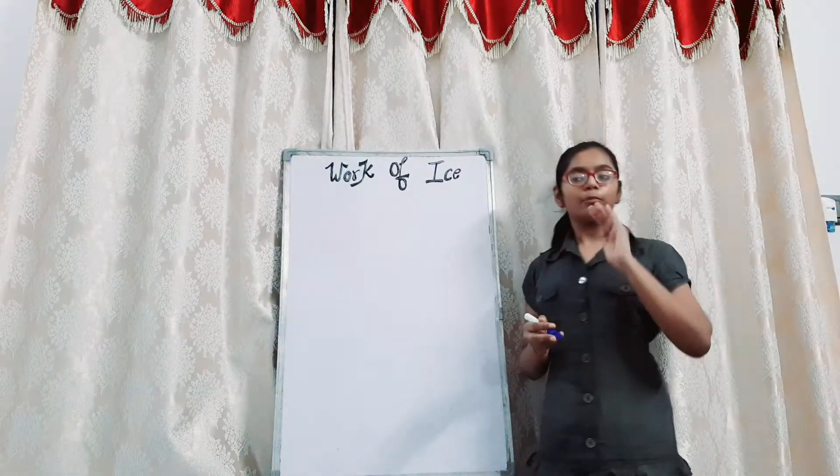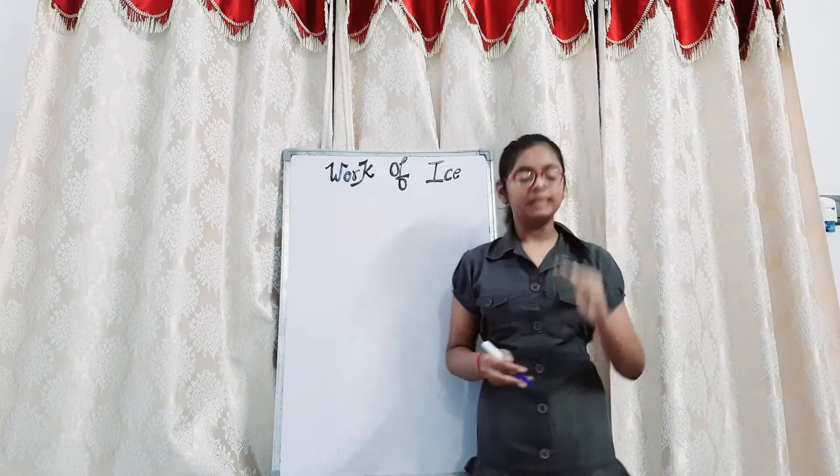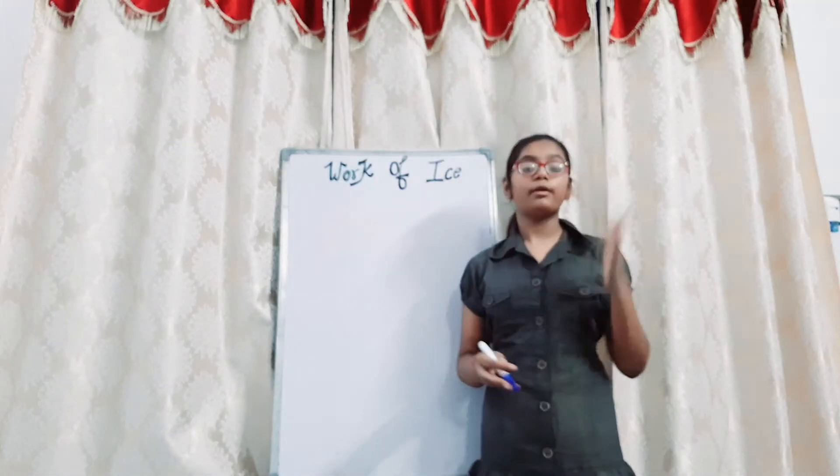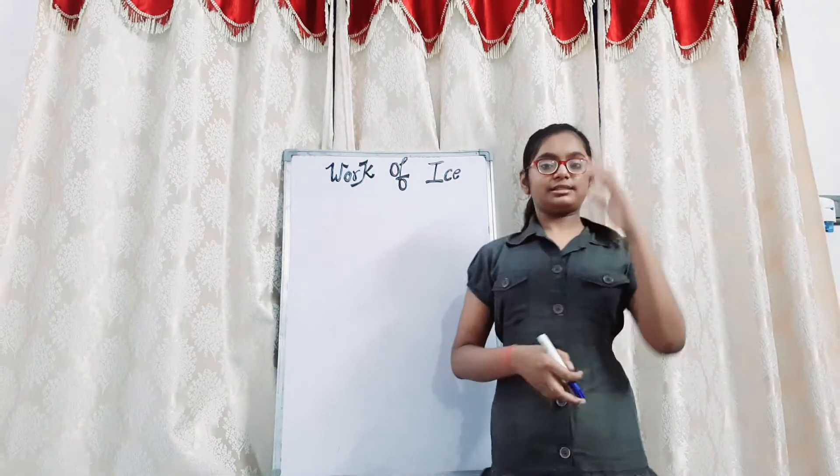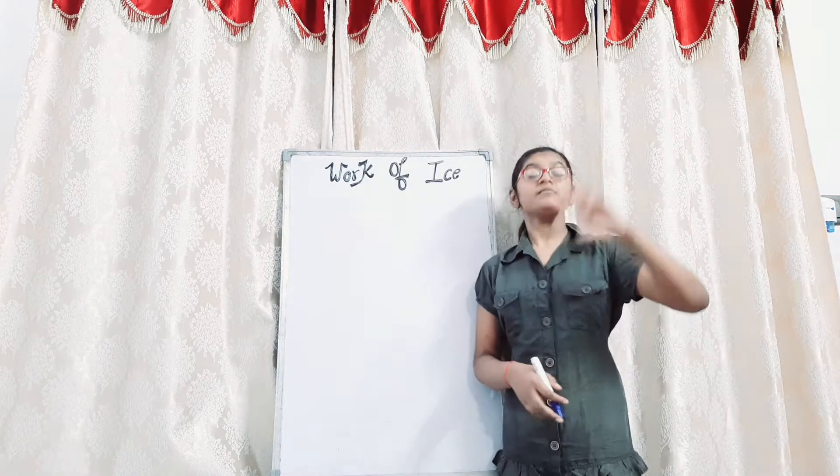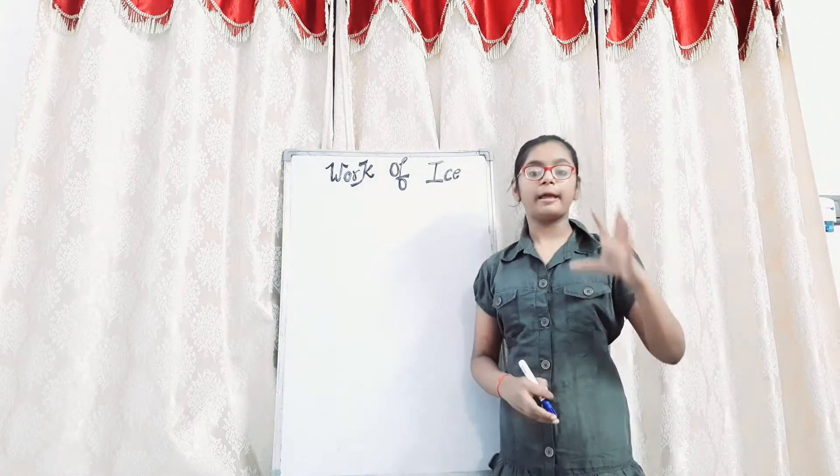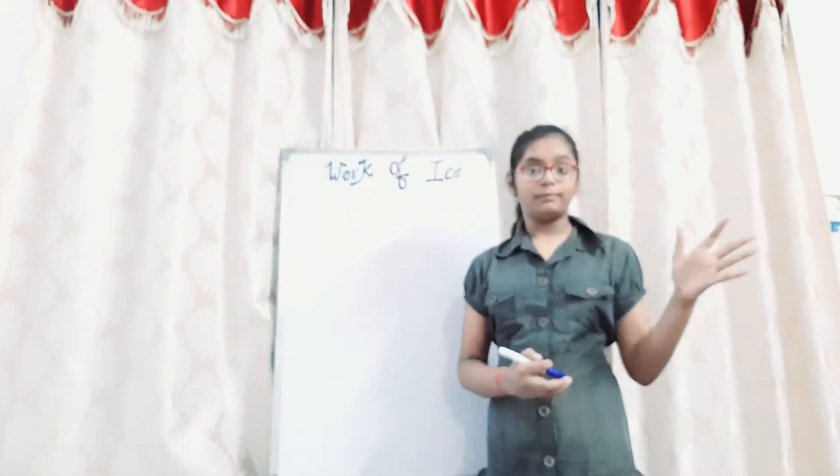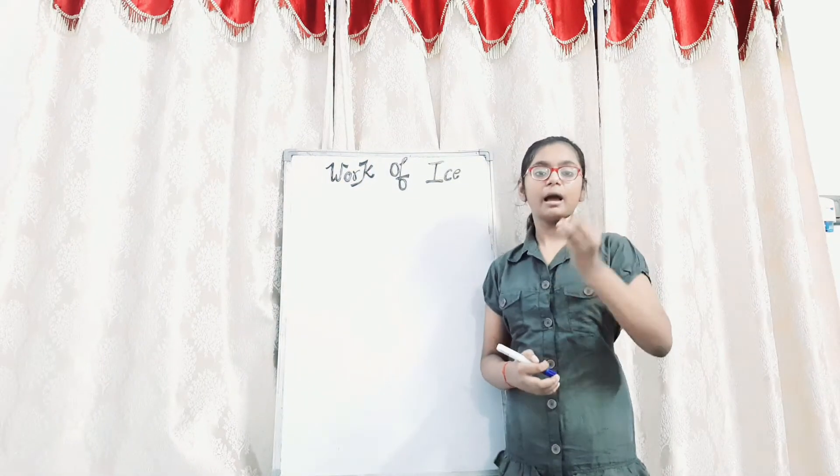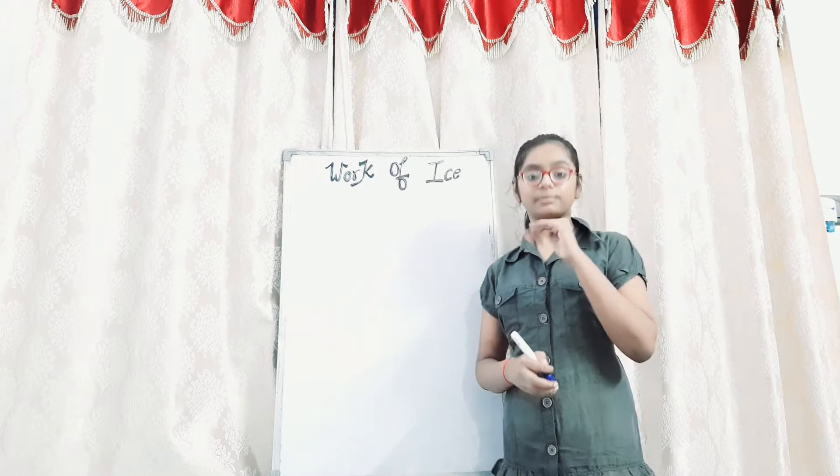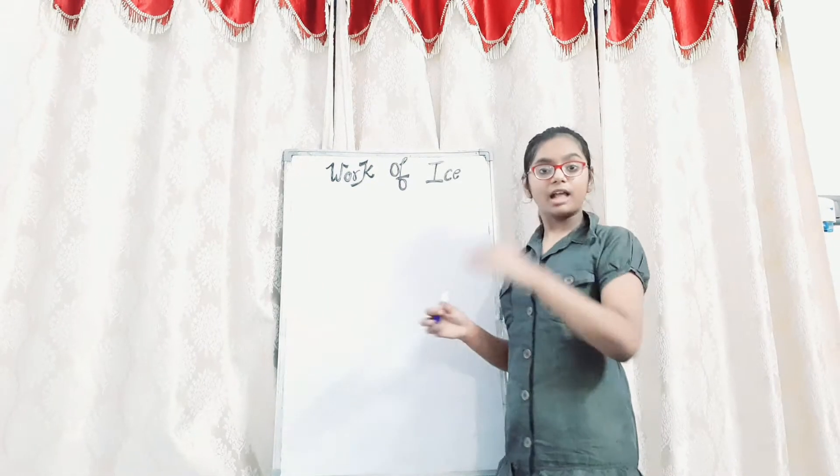So what is the work of ice? For example, mountain, like mountain Himalaya. Himalaya, all of us know that Himalaya is ice. Himalaya is a mountain which is made of ice. You can see Himalaya's name, it's about ice.